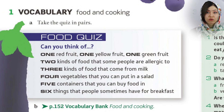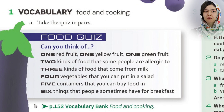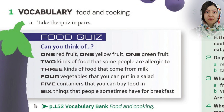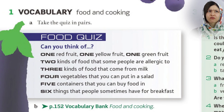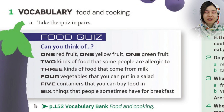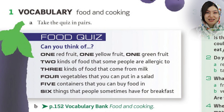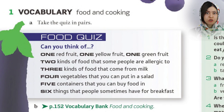One yellow fruit — let me think — banana, or even lemon. One green fruit: cucumber, or green gage. It's really sour and very tasty.